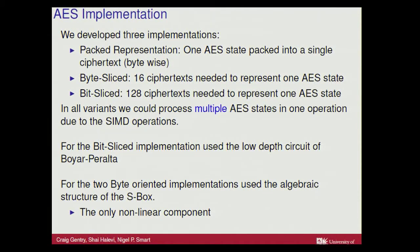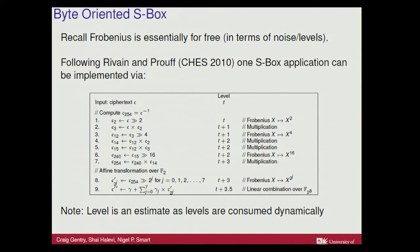Our AES implementation has three types. First, a packed representation where the entire AES state goes into one ciphertext - you only carry one ciphertext around, and since there are many slots, you can pack multiple AES states and do many AES encryptions simultaneously. Second, byte-sliced, where you have many AES states spread across ciphertexts but need 16 ciphertexts to represent a single state. Third, bit-sliced, where you enumerate the binary circuit. For byte-sliced we use the Boyar-Peralta circuit, which appears to be the best. Otherwise we use algebraic math tricks, exploiting the fact that the AES S-box has a nice algebraic description in terms of field operations.